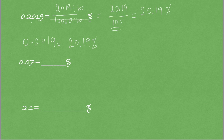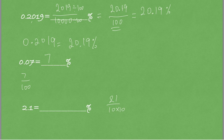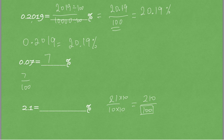0.07 equals 7 out of 100, so the denominator is already 100 — no conversion needed. It is simply 7%. For 2.1, this equals 21 out of 10. To make the denominator 100, I multiply both numerator and denominator by 10, giving 210 out of 100. Therefore, 2.1 equals 210%.